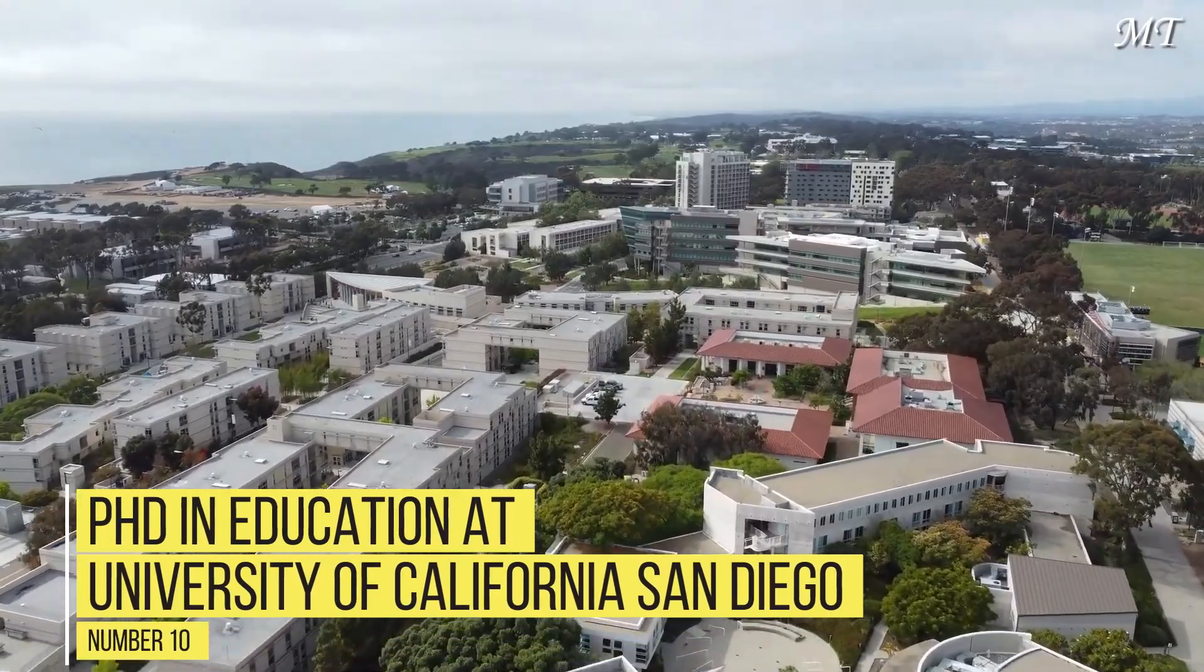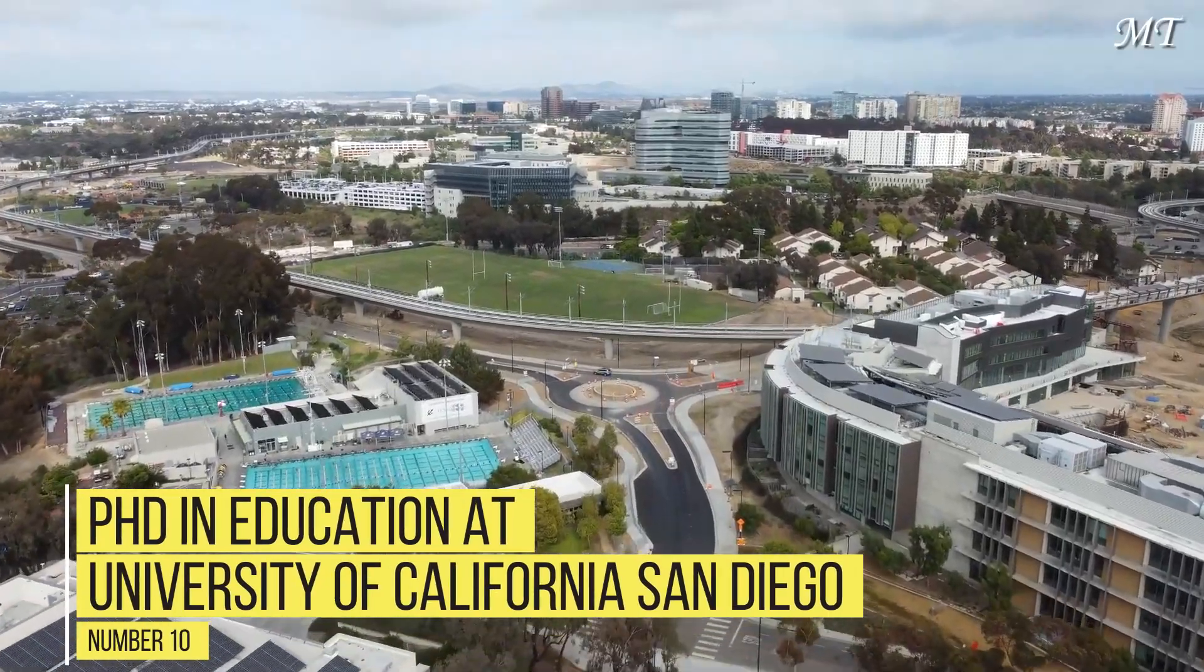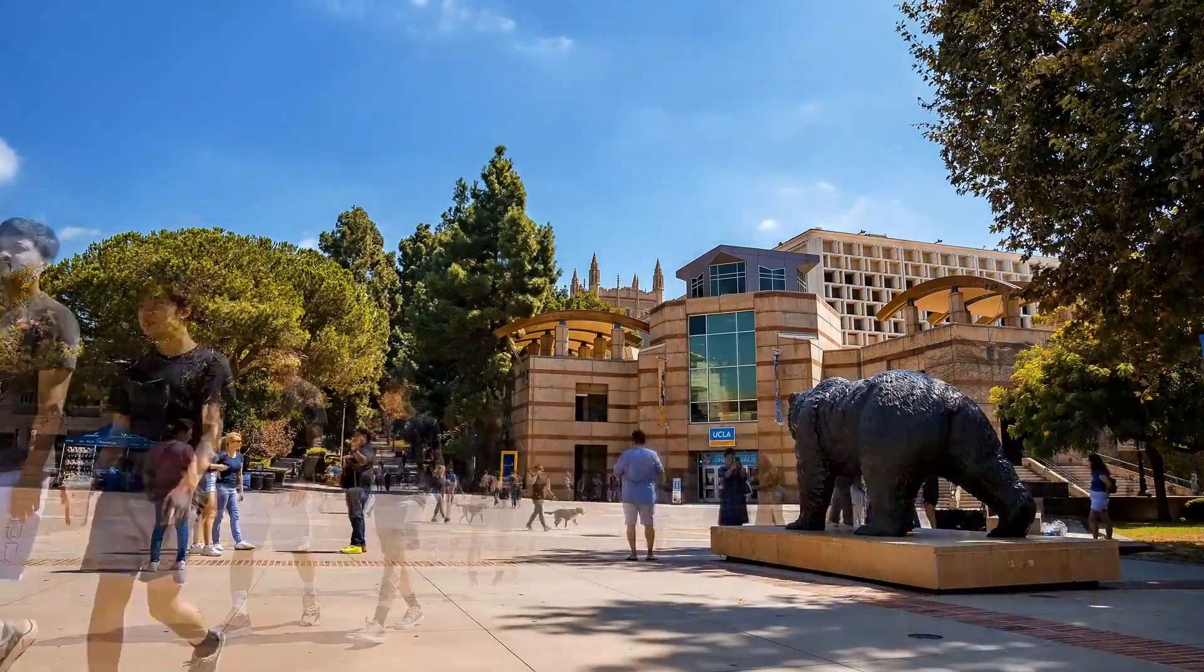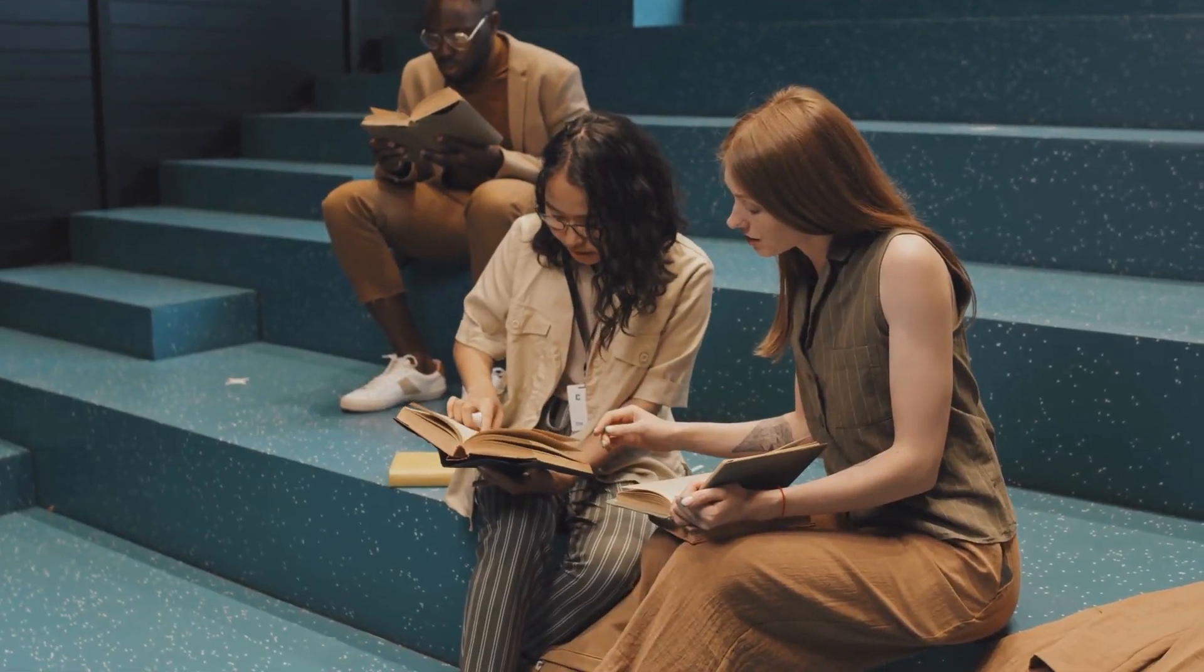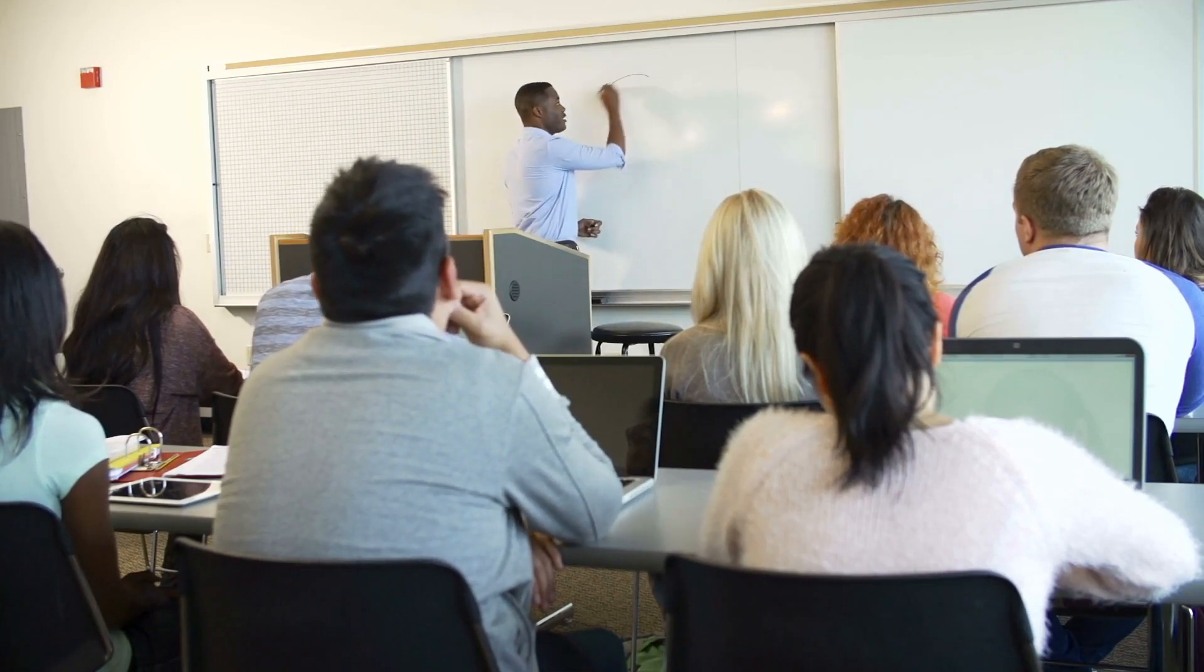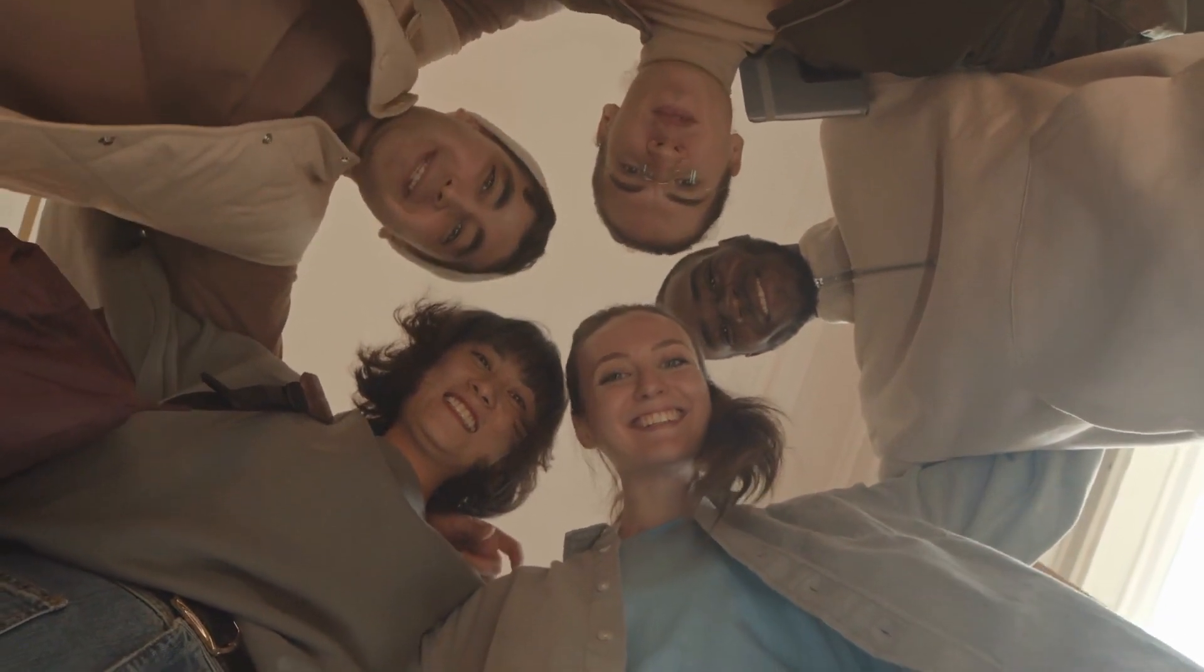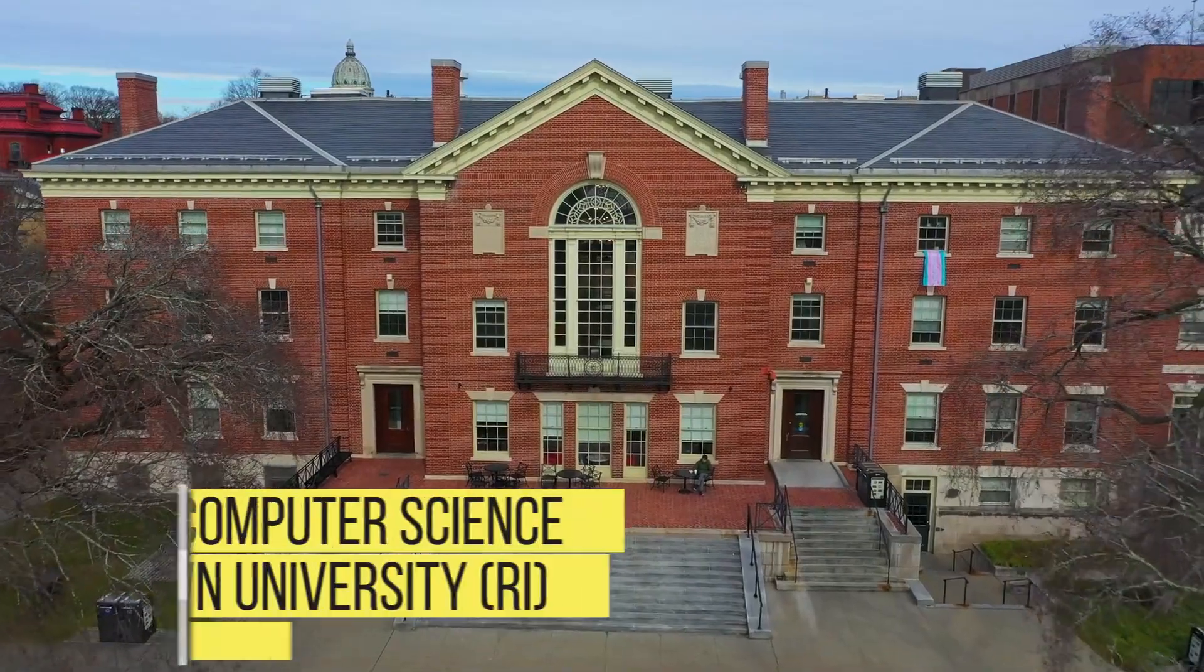Number 10: PhD in Education at University of California San Diego. The University of California San Diego provides a fully funded PhD in education with a concentration on transforming education in a diverse society. All PhD students at UC San Diego are guaranteed money for five years, which is the equivalent of a 50% TA post. For the first year, a minimum financial support package of $20,000 is provided.